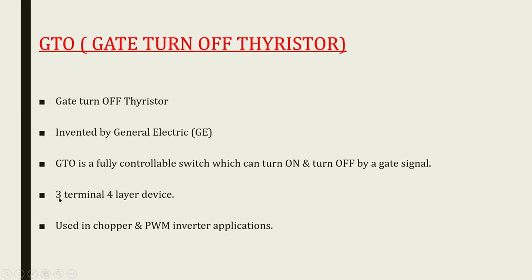Similar to other devices, GTO is a three-terminal, four-layer device with three junctions. It is mainly used in chopper and PWM inverter applications. It is invented by General Electric company and is a fully controllable switch — the major difference from ordinary thyristors — where turn-on and turn-off are both controlled by the gate signal.